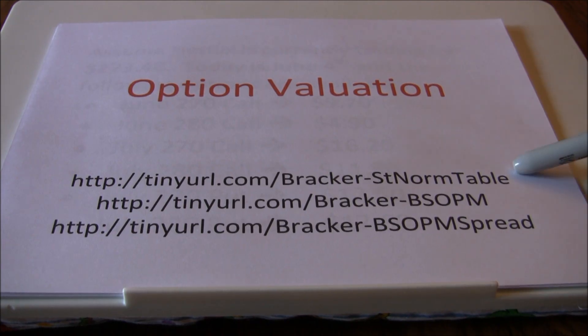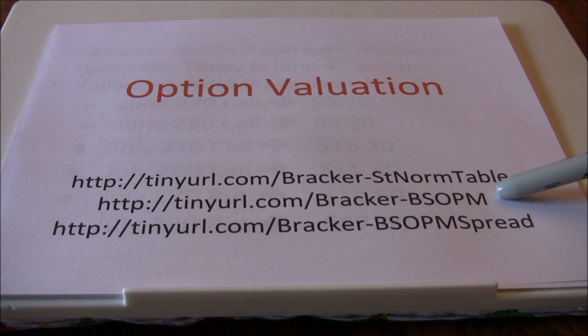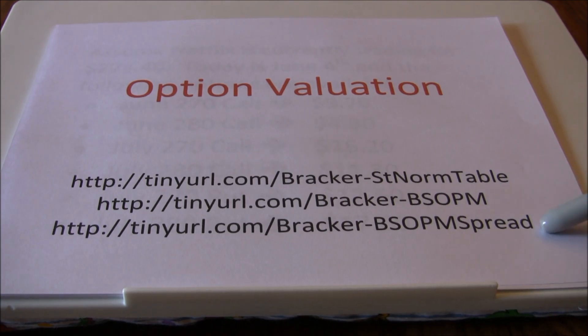I used the Tiny URL to keep the address a little bit smaller, but if you go to the Bracker-StandardNormal Table, it's just a standard normal distribution table that we'll use as part of the calculation. The BSOPM file is just a formula sheet with the Black-Scholes option pricing model formulas on it. And the last is a spreadsheet. After we walk through this by hand, you might find it's a lot easier to use an Excel spreadsheet.